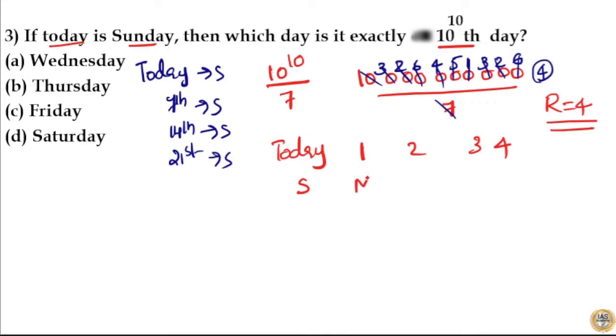Now first odd day will be Monday, second odd day is Tuesday, third odd day is Wednesday, fourth odd day is Thursday.